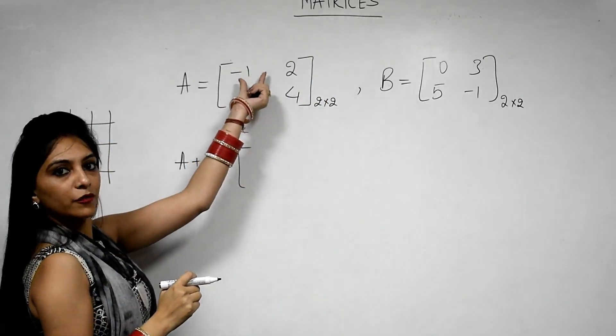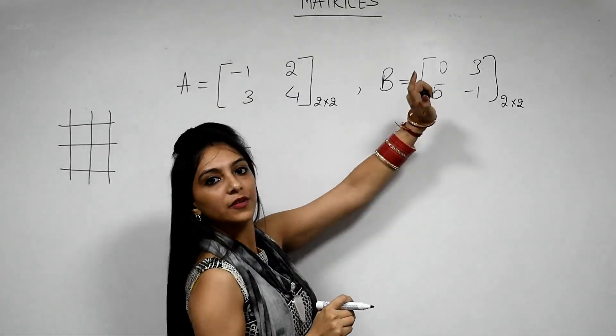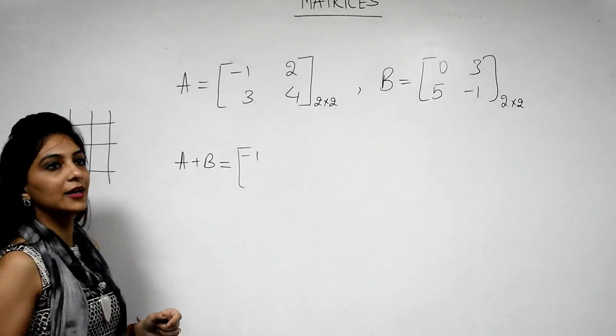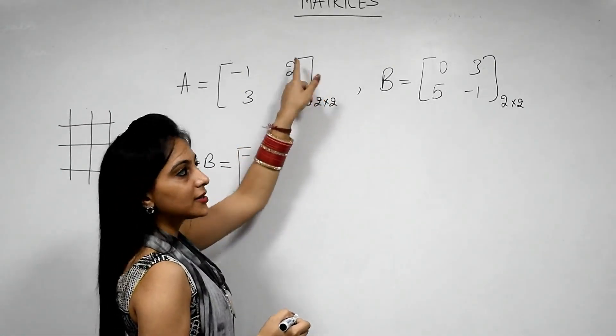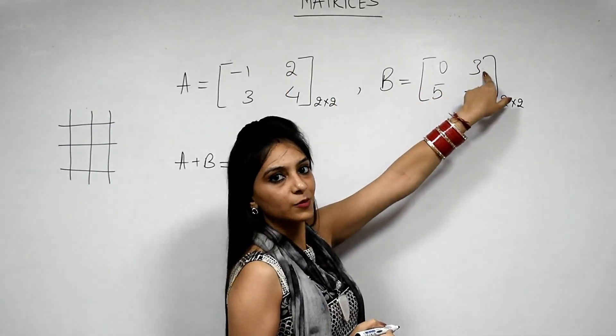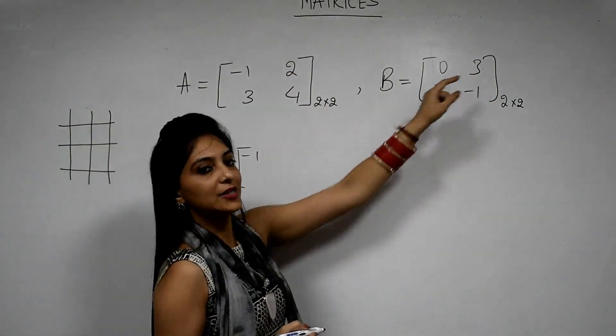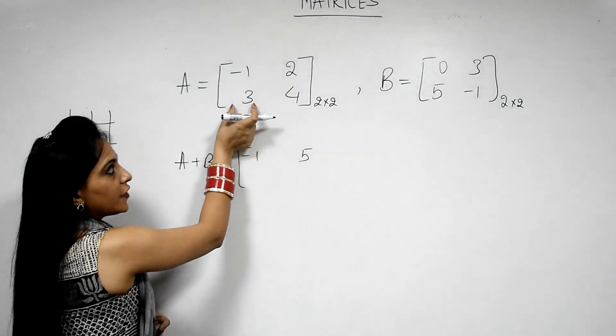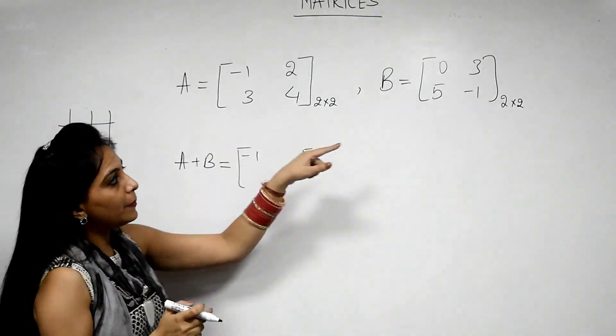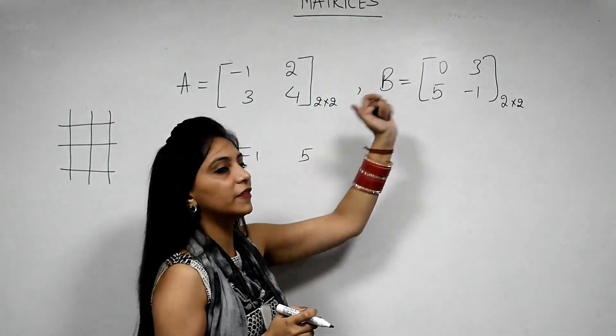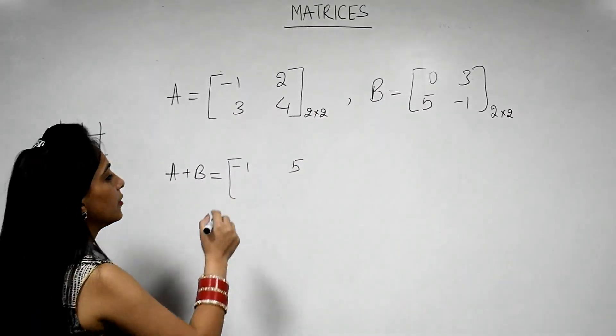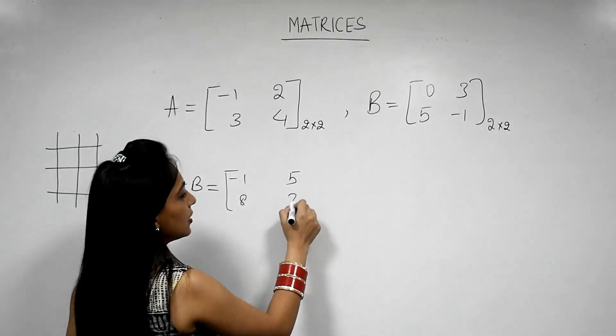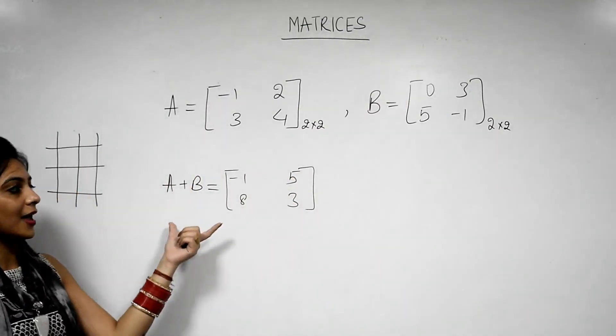First element of this matrix will be added to first element of this matrix. So minus 1 plus 0 which will be minus 1 again. Then second element of this matrix will be added to second element of this matrix. Means 2 plus 3 which gives us 5. Same way, now come to second row. First element of second row will be added to first element of second row of this matrix. So we get 3 plus 5 which is 8, and then 4 minus 1 which is 3. So this is our result in matrix A plus B.